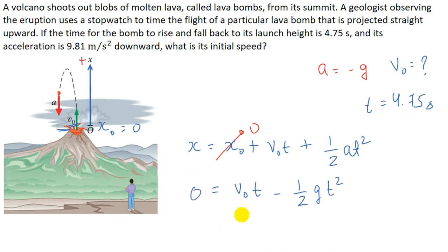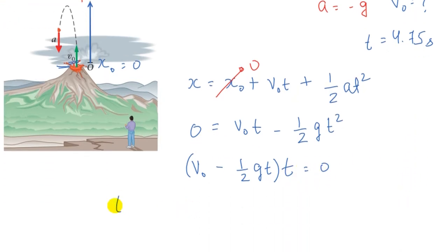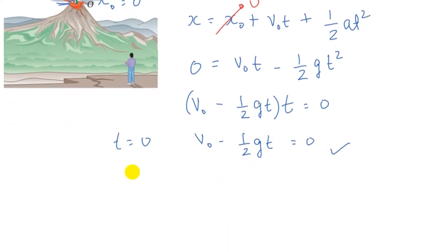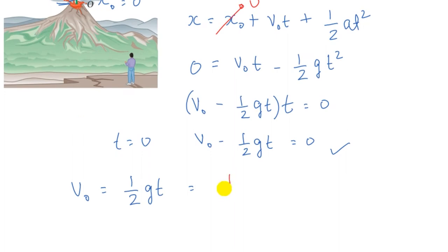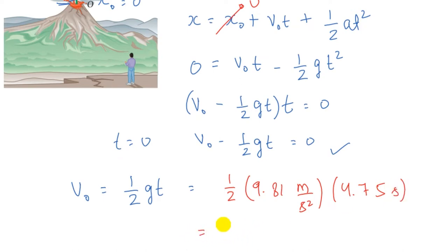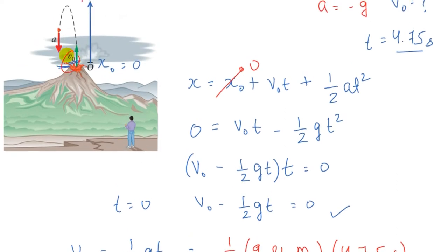Taking t common: t(v-naught − ½g·t) = 0. So either t = 0 or v-naught = ½g·t. From this, v-naught = ½ × 9.81 × 4.75, which gives the initial velocity as approximately 23.3 meters per second. This is the initial speed of the lava bomb.